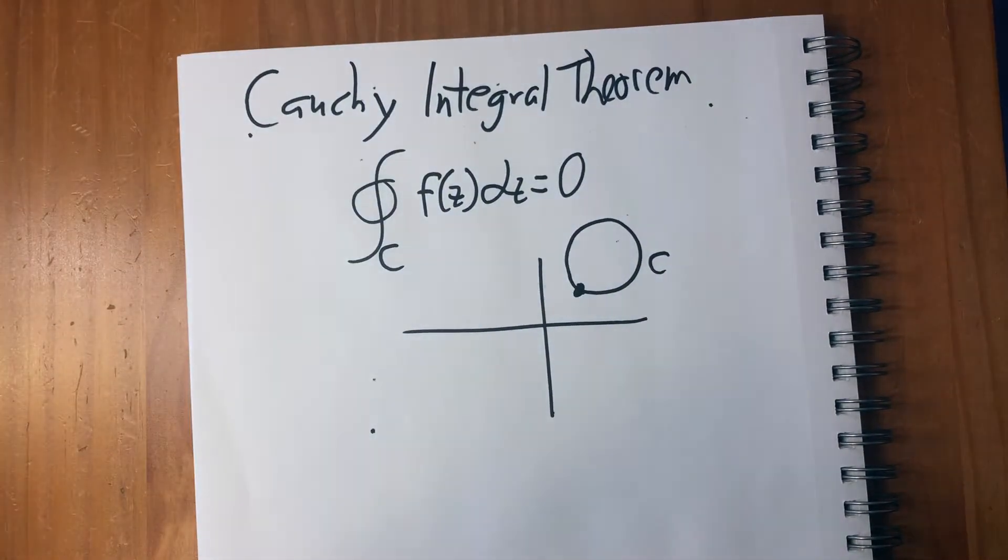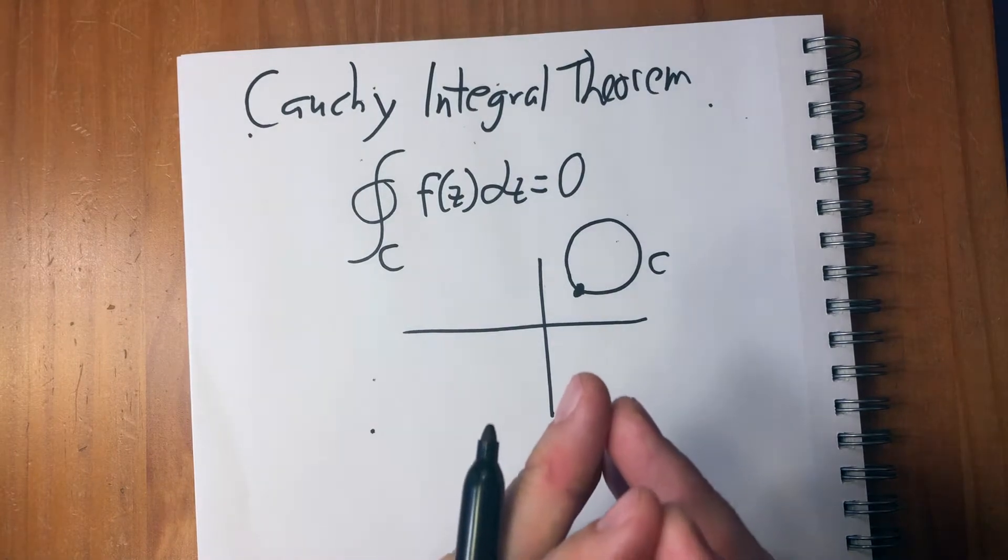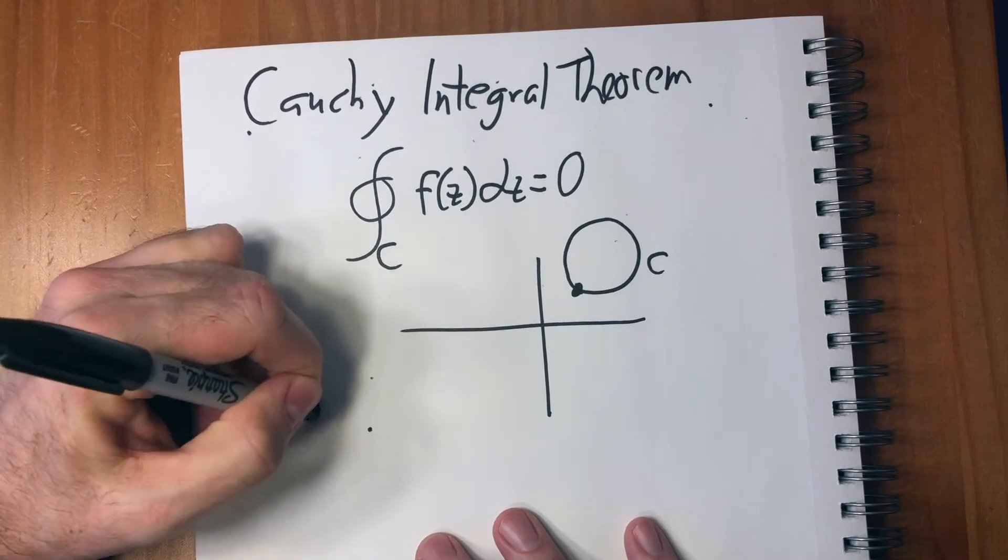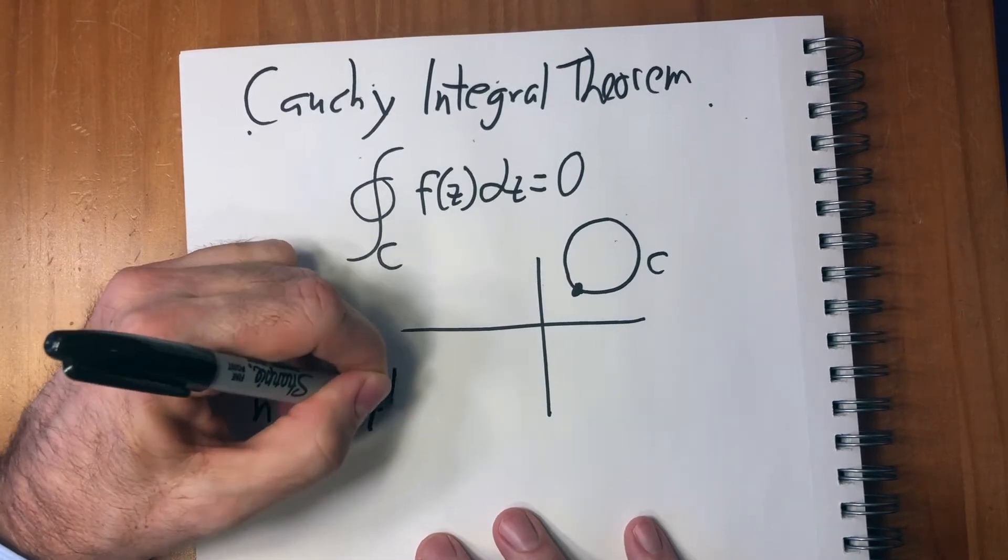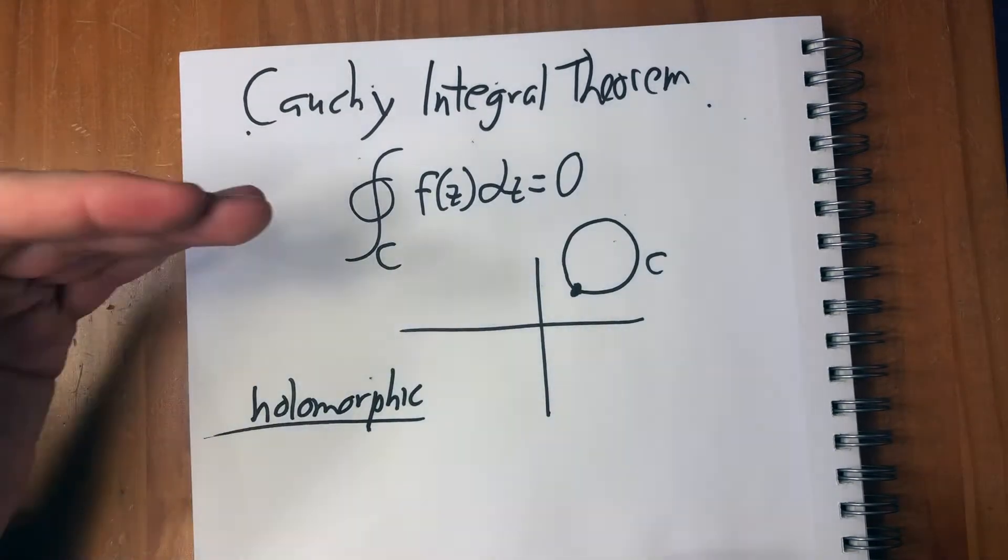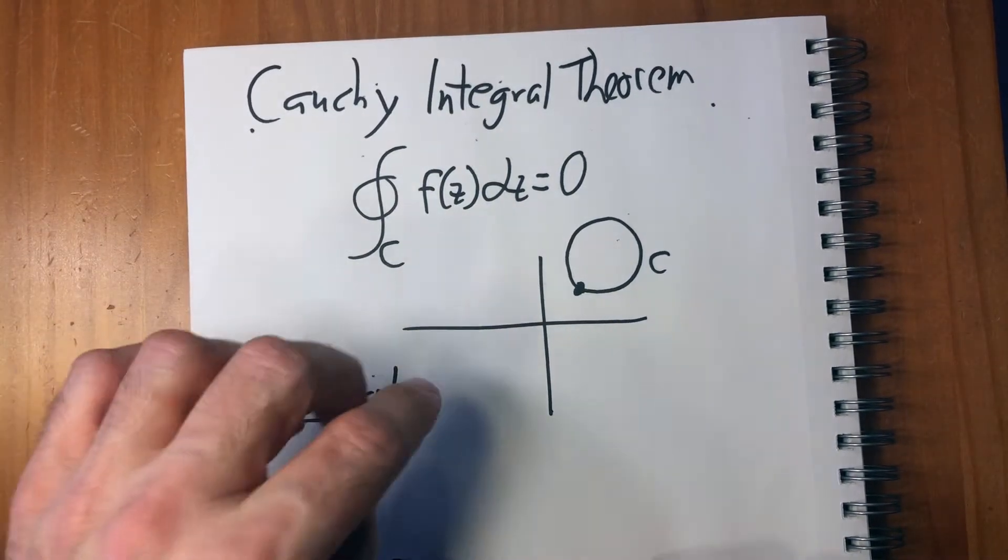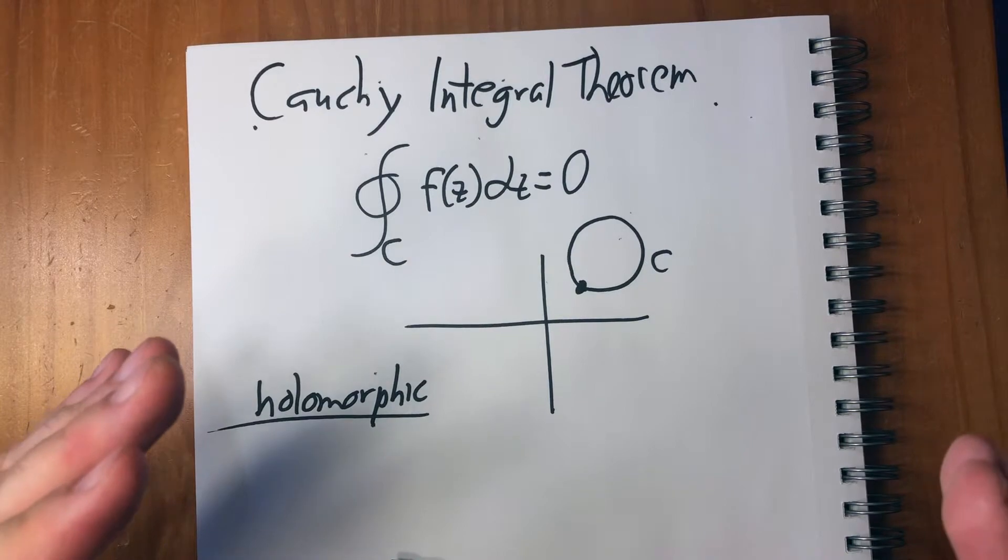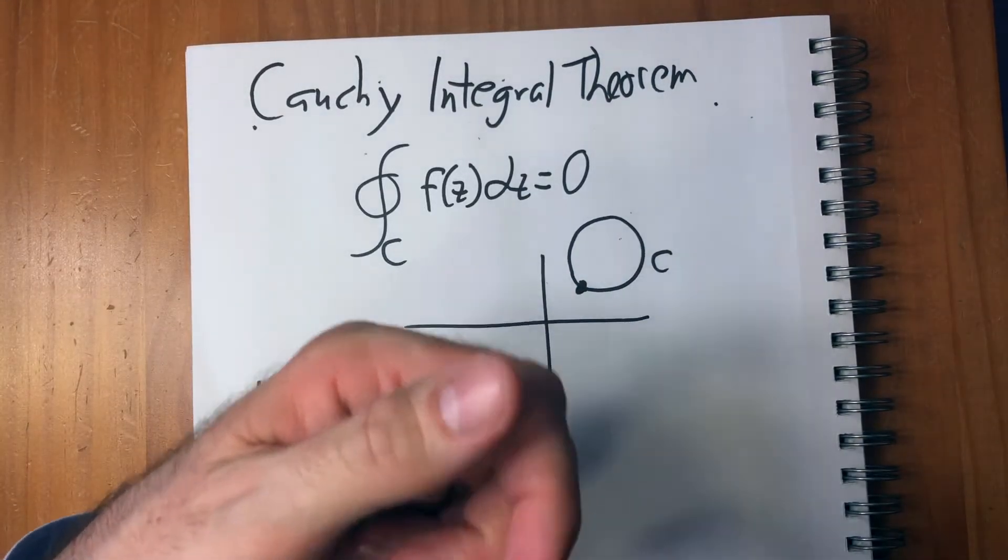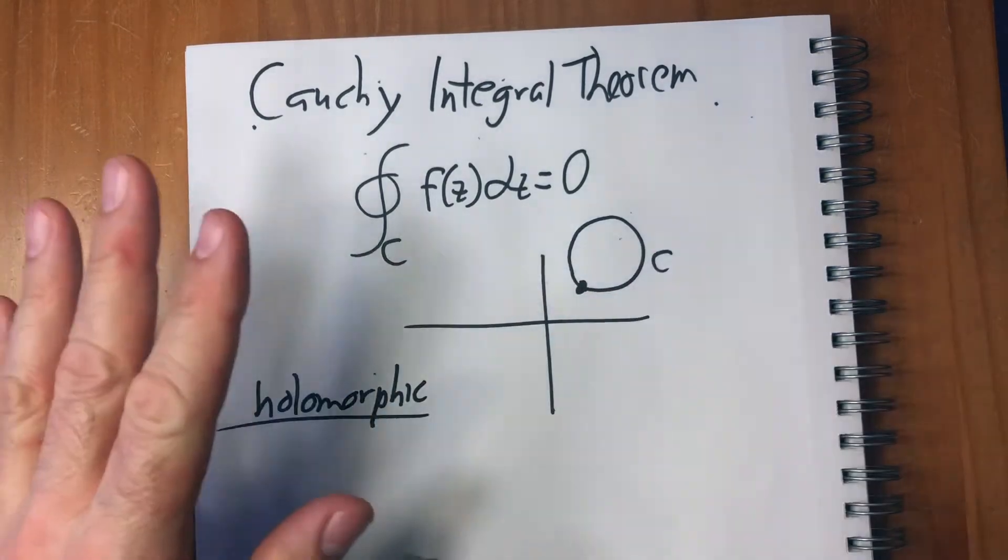The big thing then is our functions... The word is holomorphic. I've been talking about it, but I haven't named it. Holomorphic means that it is differentiable everywhere. So that means that at every point, the derivatives going from one direction equal the derivatives going from another direction. So it's basically smooth.